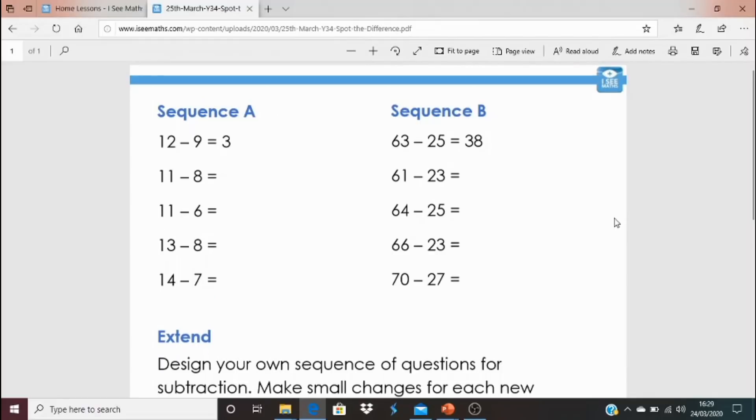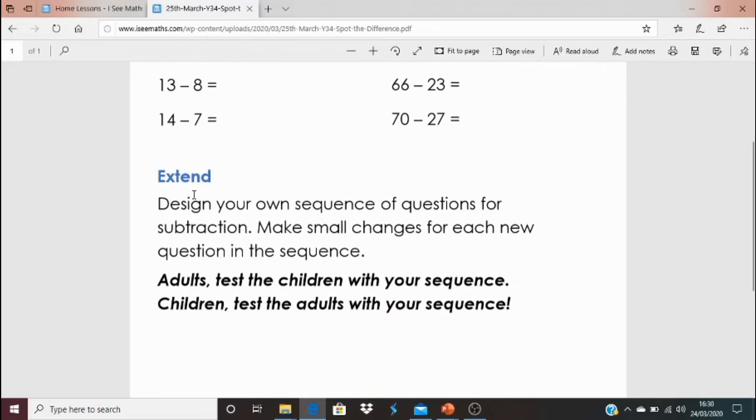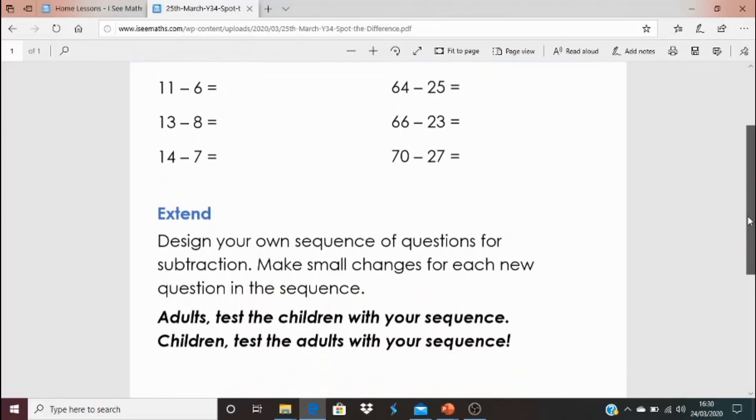Now I've got three different tasks to have a go at. You might have a go at sequence A. If you don't immediately know the answers to these calculations this would be really good. What's the pattern that exists between the calculations here? So how can you work out the answer to this question using the information above? It might be you prefer to have a go at sequence B. Or equally maybe you think you know I can set my own level of challenge. And what I would love to see is children writing their own sequence of questions. Subtraction questions. Where you think of writing one question with an answer and then you think I'm going to change these numbers slightly. And you come up with your own sequence. So extend says this. Design your own sequence of questions for subtraction. Make small changes for each new questions in the sequence. Like the example I've done above but you might adjust the level of difficulty so it's just right for you.